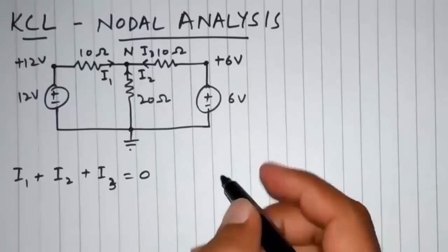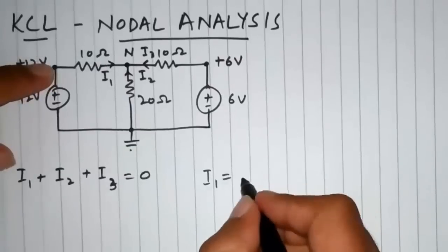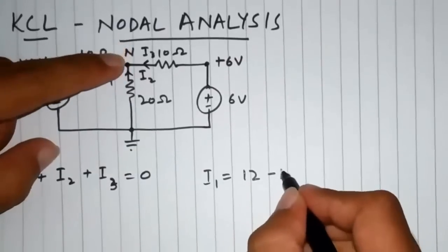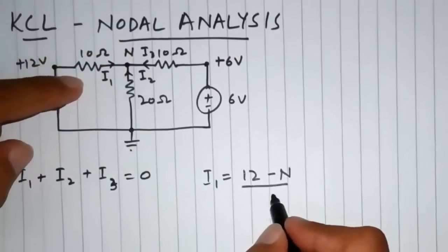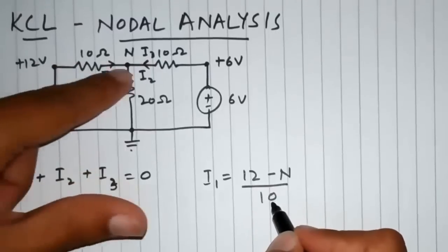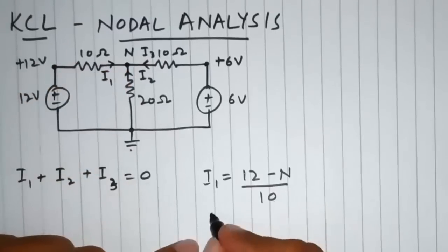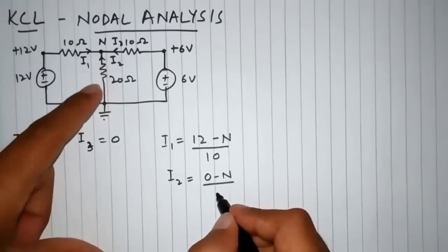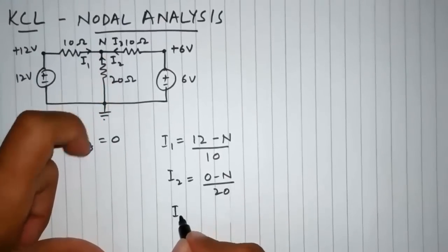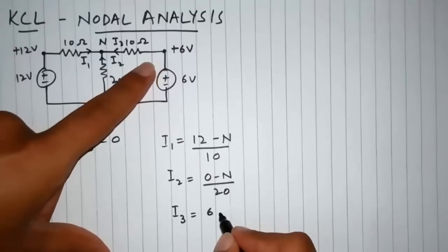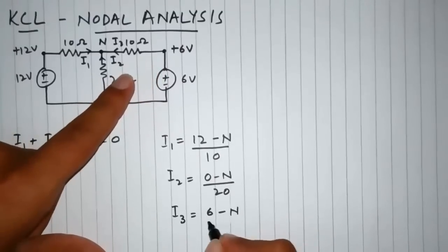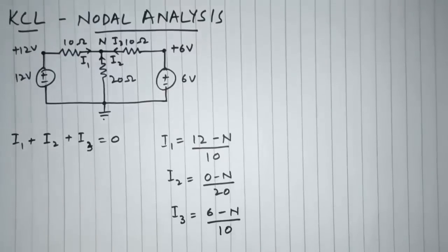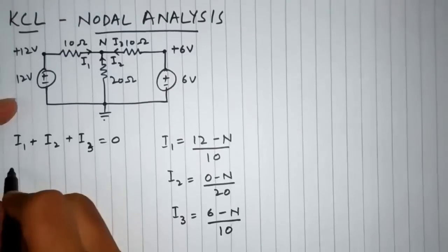We will say that I₁ is equal to higher potential, that is 12 volts, minus lower potential, that is N volts, divided by the resistance that is present between them. Similarly, I₂ equals 0 volts minus N volts divided by the resistance between them, which is 20. And I₃ equals 6 volts minus N volts divided by the resistance between them, that is 10.